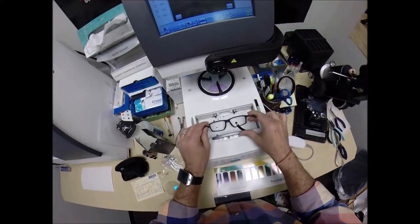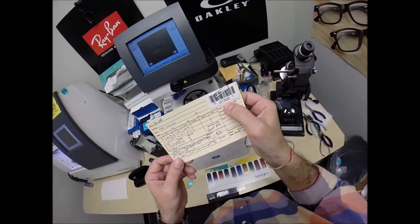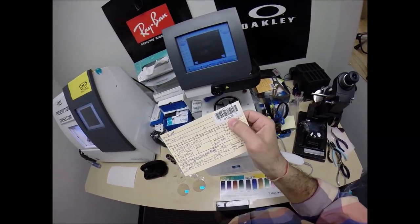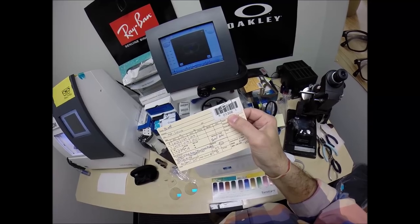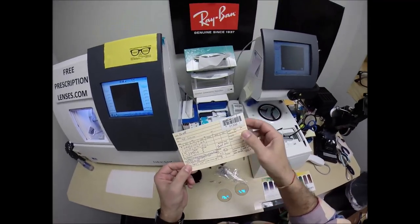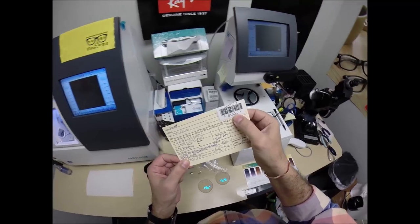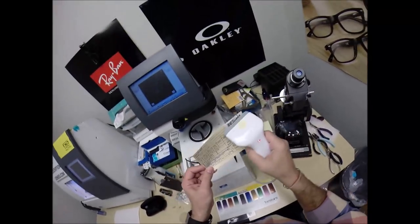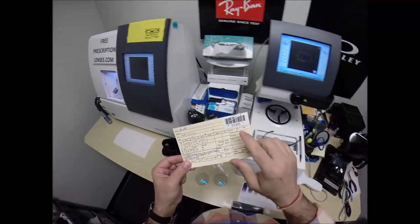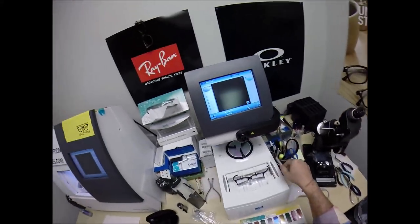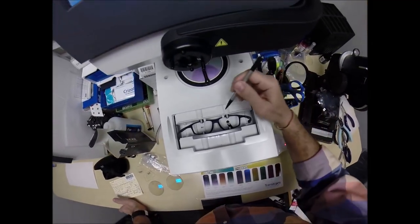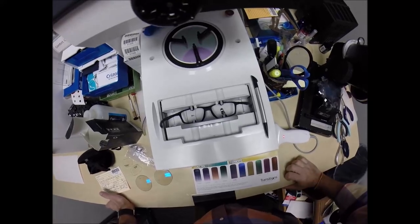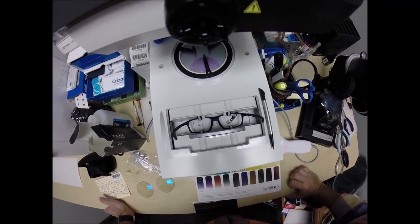I'm going to pop out the original demo lenses, put your frame into the tracing element of my blocker. I'm going to barcode the sticker. You are secret agent 1306. I'm going to hit the start button. The little stylus is going to pop up and trace the inside bevel of the right side of the frame before doing the same thing on the left.